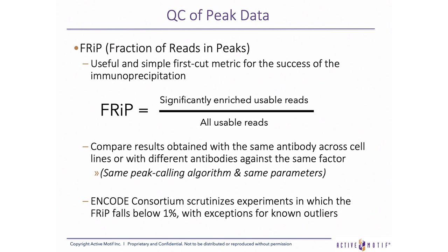Typically, a minority of reads in ChIP-seq experiments occur in significantly enriched genomic regions, or peaks — the remainder represent background. Therefore, the FRiPS score, or fraction of reads in peaks, is a useful first-pass quality metric for the success of the immunoprecipitation. It is calculated by dividing usable reads in significantly enriched peaks by the total of all usable reads. The resulting FRiPS score allows comparison of results from IPs with the same antibody across different cell lines, or with different antibodies against the same factor, assuming the same peak calling algorithm and parameters were used. The ENCODE consortium recommends scrutinizing experiments where the FRiPS falls below 1%.